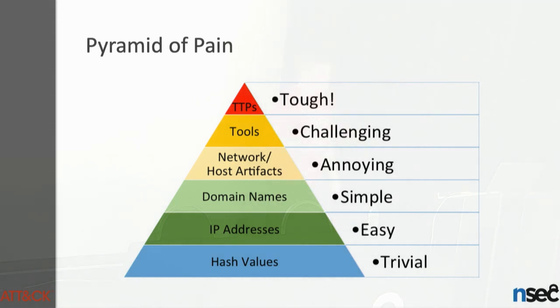The Pyramid of Pain is a simple diagram that shows the relationship between the types of indicators you might use to detect adversary activities, and how much pain it will cause them if you deny them those indicators. Starting at the bottom with hash values up to domain names — it is fairly simple for defenders to detect, but it's also very simple for adversaries to modify those indicators.